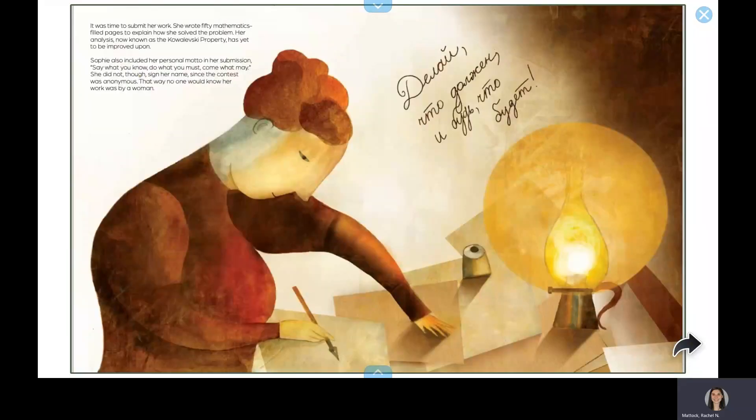It was time to submit her work. She wrote 50 mathematics-filled pages to explain how she solved the problem. Her analysis, now known as the Kowalewski property, has yet to be improved upon. Sophie also included her personal motto in her submission. Say what you know, do what you must, come what may. She did not, though, sign her name, since the contest was anonymous. That way, no one would know her work was by a woman.